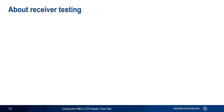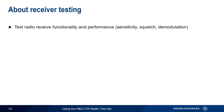The next test we'll look at is Receiver Test Mode. When operating in receiver mode, the CTH tests the receiver portion of the radio. More specifically, the CTH can be used to test sensitivity, squelch, and demodulation.